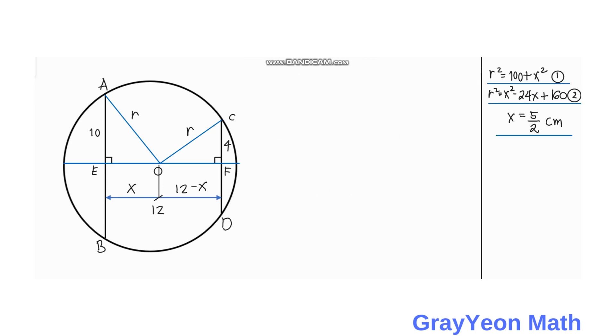And finally to find the value of R, we have R squared is equal to 100 plus X squared, or R is equal to the square root of 100 plus X squared. So R is equal to the square root of 100 plus X squared over 4.